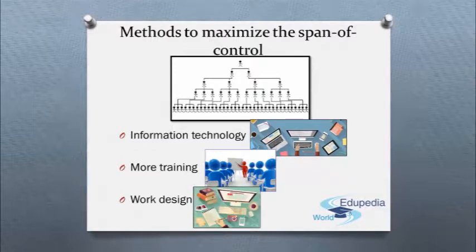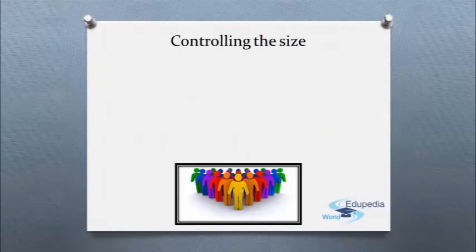Work design. If the tasks are designed to be independent, loosely coupled with few interdependencies and probable conflicts, the relationship complexity can be reduced. Now, how do we control the size?